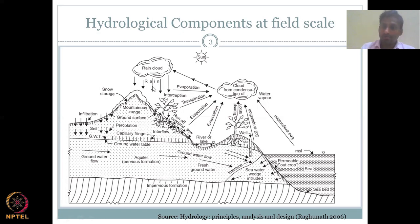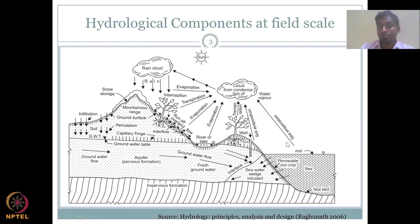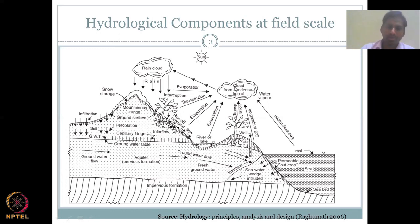You have your rainfall; part of the water goes into the soil, part goes as runoff, and then the runoff can be evaporated. There is also water that mixes with the sea, evaporates into water vapor, condenses as clouds, and goes back as rainfall.